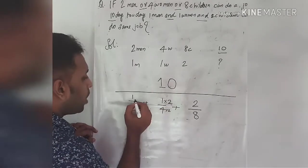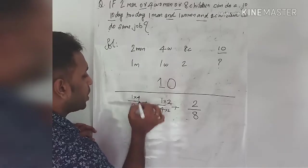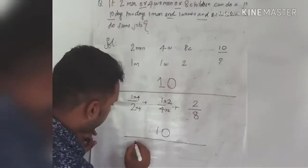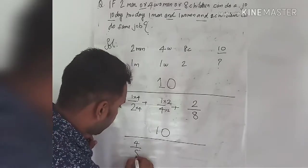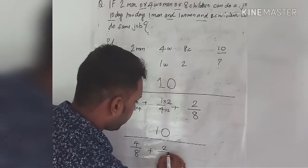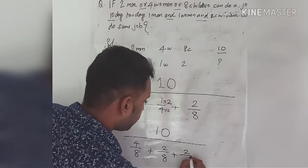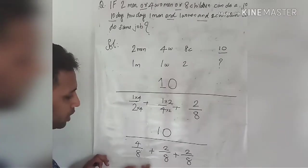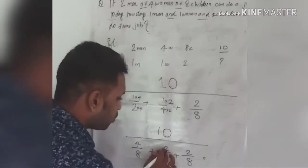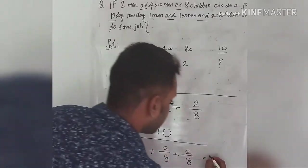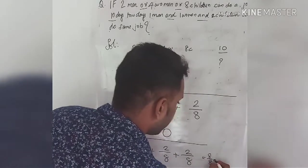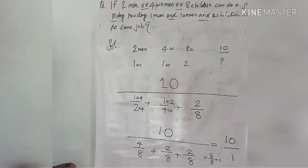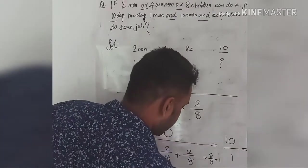The denominator is: (1/2) + (1/4) + (2/8). Finding LCM which equals 8, the denominator becomes (4/8) + (2/8) + (2/8). So 4 plus 2 plus 2 equals 8, and 8 by 8 is equal to 1. Then the numerator is 10, so 10 divided by 1 equals 10. The answer is 10 days.